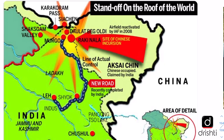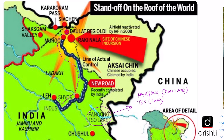On the map we can see the points of conflict more clearly. The Daulat Beg Oldi forward post is here, connected to Leh by the road running along the Shyok River. This is Pangong So Lake — 'So' means lake and 'Pangong' means conclave in Tibetan, so it means 'conclave lake.' This is the major flashpoint between India and China. The Shaksgam Valley has been ceded to China by Pakistan, which India does not recognize. Chusul is another place where border skirmishes have taken place.